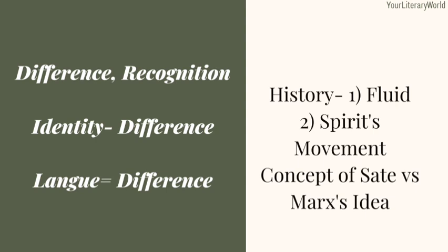Marx says the monarch cannot be a benevolent philosopher king; in most cases monarchy reflects the interest of the powerful people — the bourgeoisie. That's the end of the lecture on Hegel. If you have any questions, go to the comment section or send a text message, and I will provide whatever help you need.